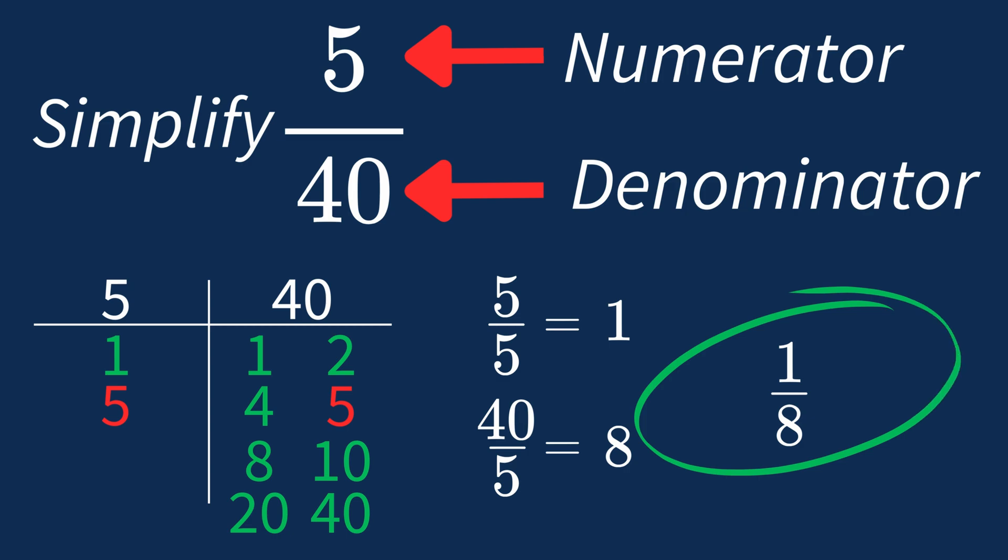And we know that 1 over 8 is in its simplest form, because the only common factor between 1 and 8 is 1. And when 1 is the largest common factor, we know that fraction is already in its simplest form.